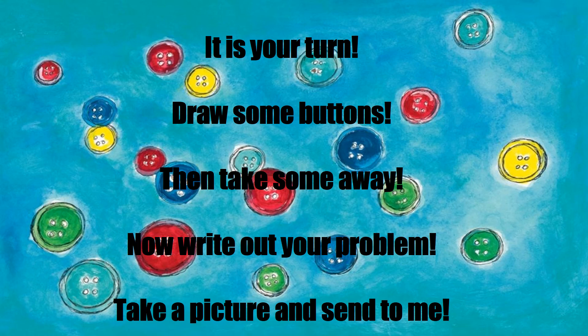It is your turn. Go get a piece of paper and a pencil or some crayons or markers. On the paper, draw some buttons. You can draw as many as you want — maybe four, six, seven, three, or maybe ten buttons. It's up to you. Then you are going to take some away — cross some out. Maybe you'll take one away, maybe more. After you X out some of your buttons, count how many are left. Then write your math problem: the number of buttons you drew, minus the number you crossed out, equals how many are left. Don't forget to take a picture and send it to me on Dojo or upload it to Google Classroom.